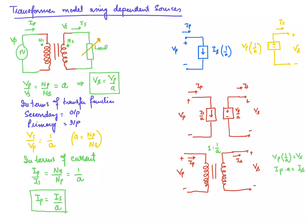In this video we will discuss how we can model transformers with the help of dependent sources. A transformer circuit is shown, consisting of the primary winding and the secondary winding.